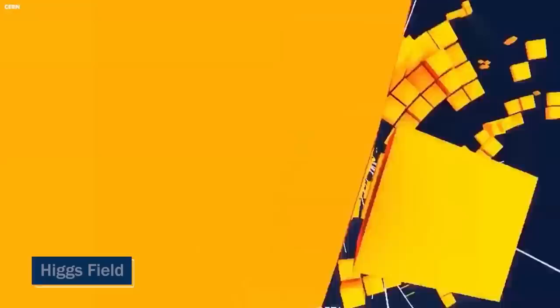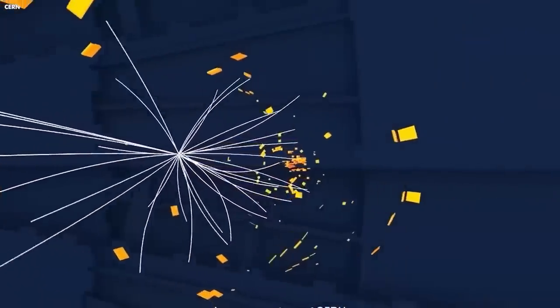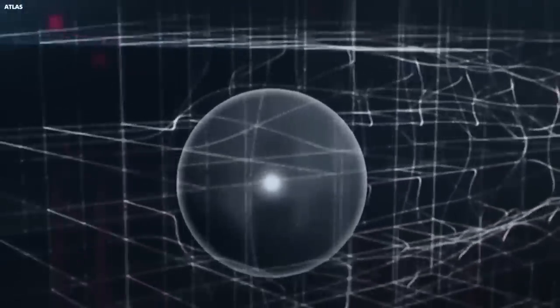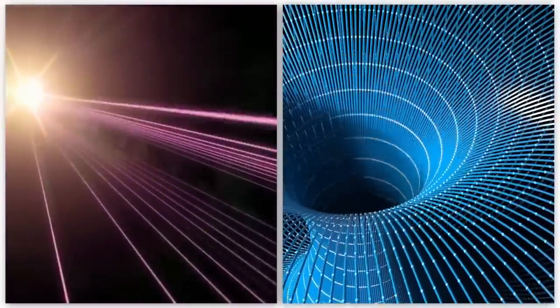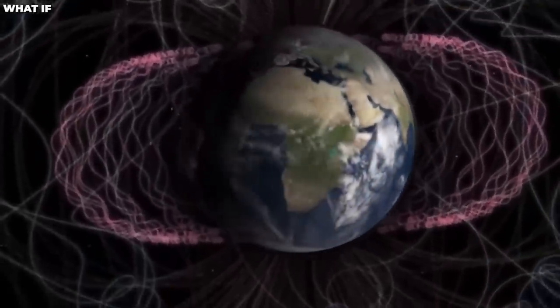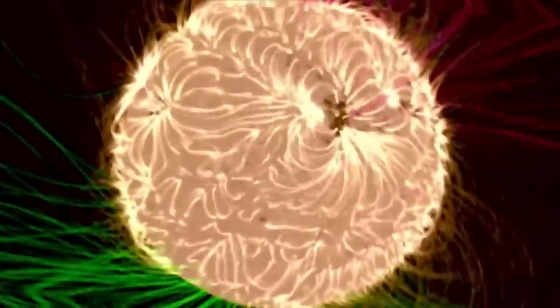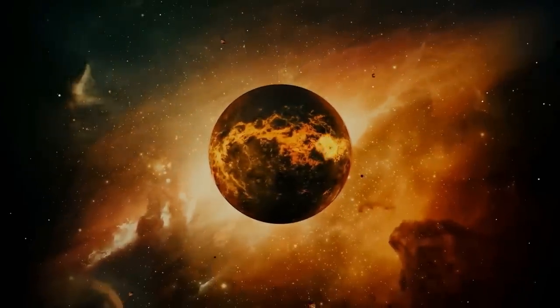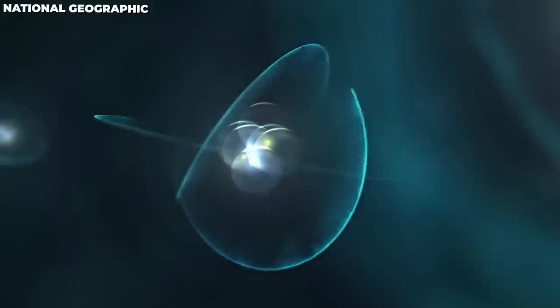It turns out that the Higgs field, which plays a crucial role in the concept of false vacuum, would have to overcome an enormous energy barrier through a process called quantum tunneling to get the lower energy true vacuum state. This barrier is so huge that it would likely take many, many times the age of the universe for the transition to occur. In other words, although the collapse of the universe is a problem in theory, practically, it is nothing to worry about, for now.